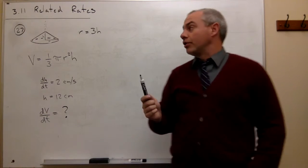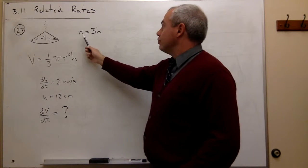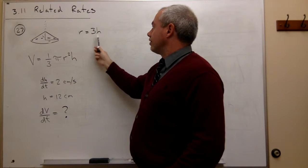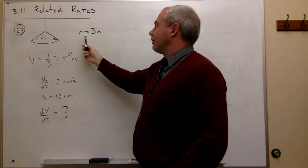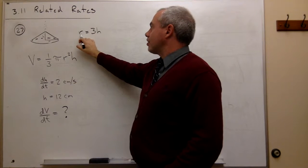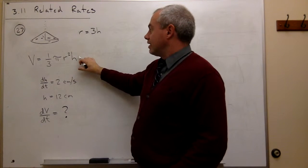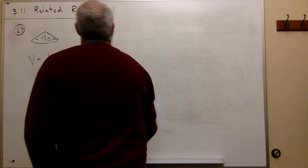and get it into one variable by using that r is equal to three h. And so what I'm going to do is I'm just going to replace r with three h in this equation for volume. So let's